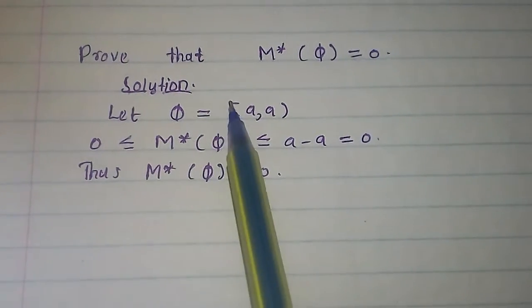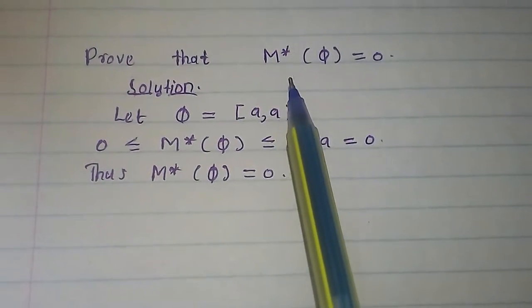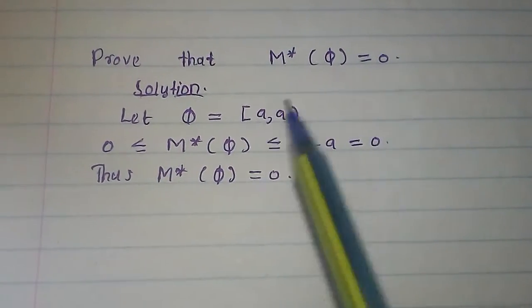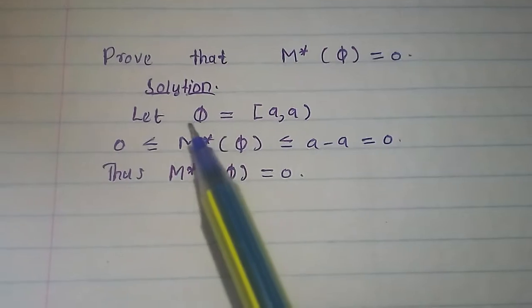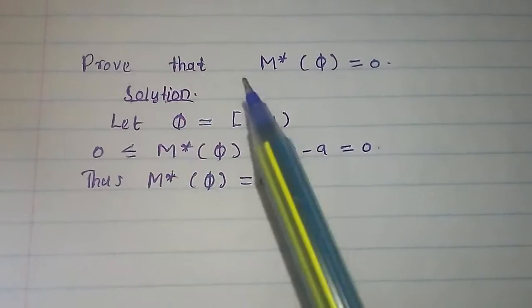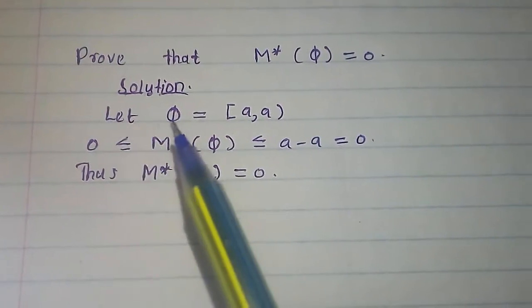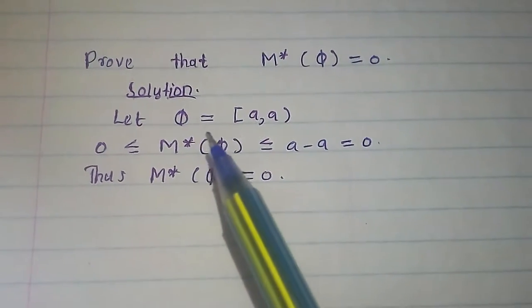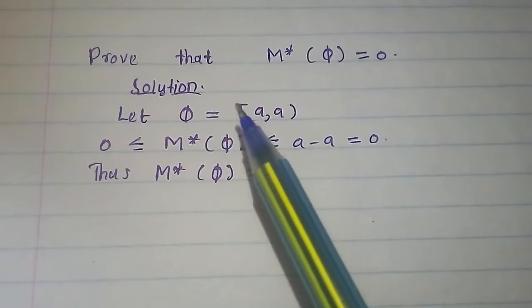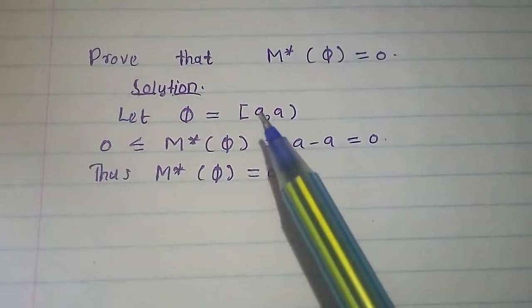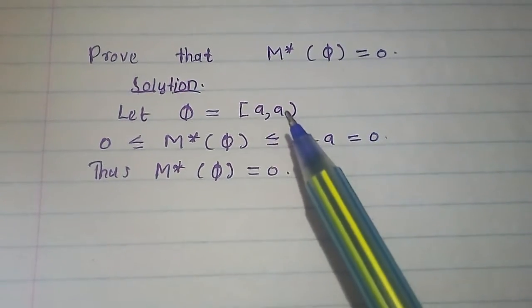Prove that the outer measure of an empty set equals zero. We approach such a question by letting the empty set be equal to the closed-open interval [A, A).